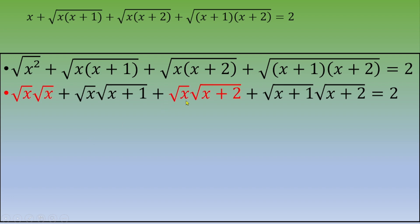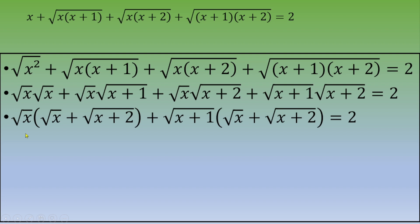Now we can factor. From the first two terms, the common factor is √x, and from the last two terms the common factor is √(x+1). We get √x·(√x + √(x+2)) plus √(x+1)·(... ) and this equals 2.